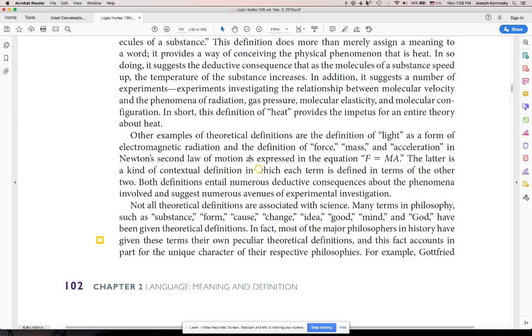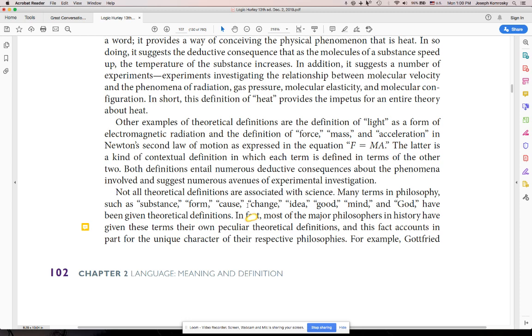So for this section, you're given a bunch of trigger words that are highlighted. Subject, form, cause, change, idea, good, mind, God. For example, in my philosophy or intro to philosophy class, we talk about God, mind, good, idea, change, cause, form, substance, all those. You look at those words right now and you're thinking, they're pretty vague.